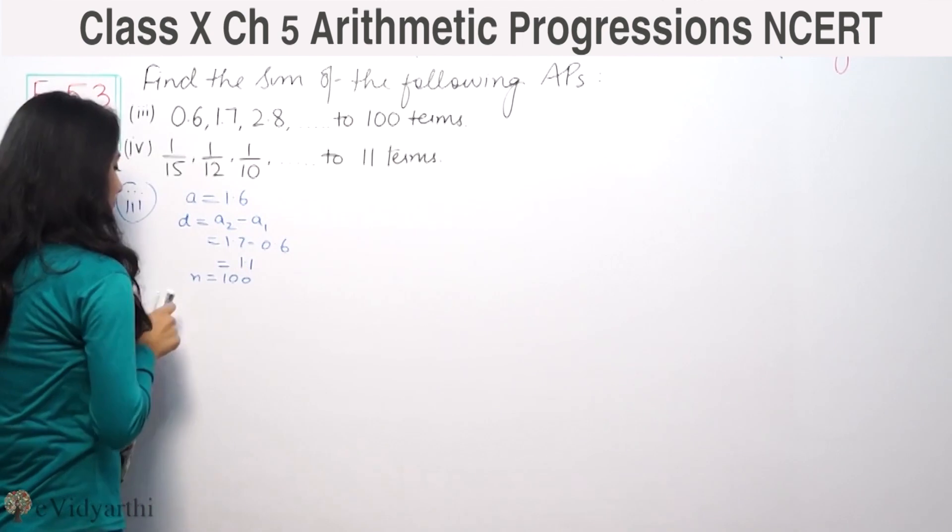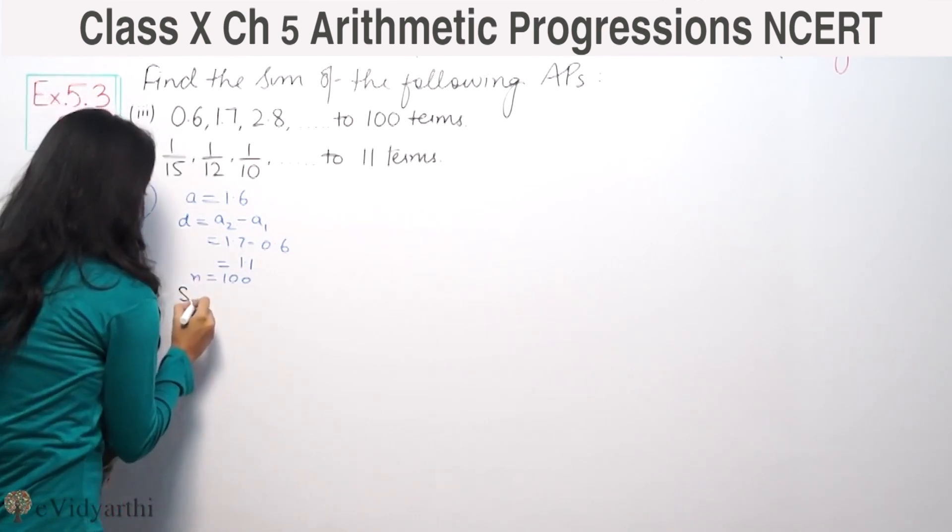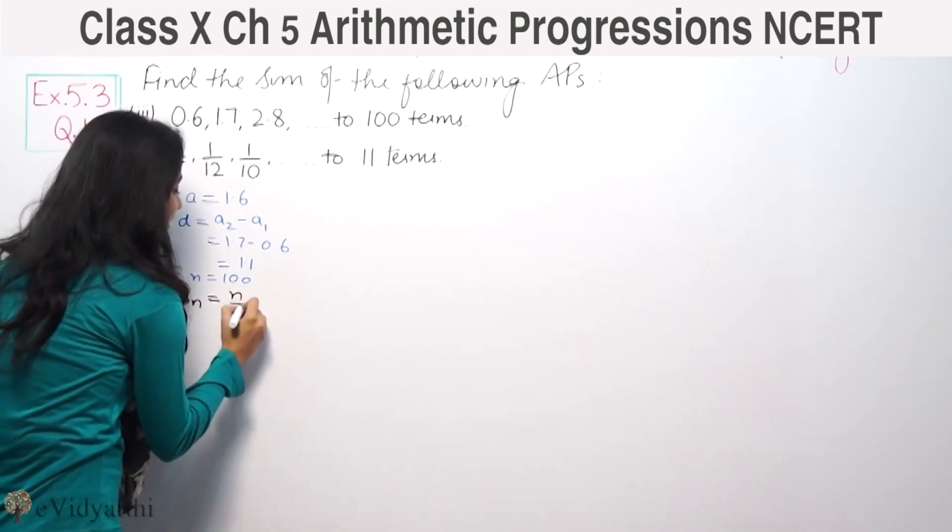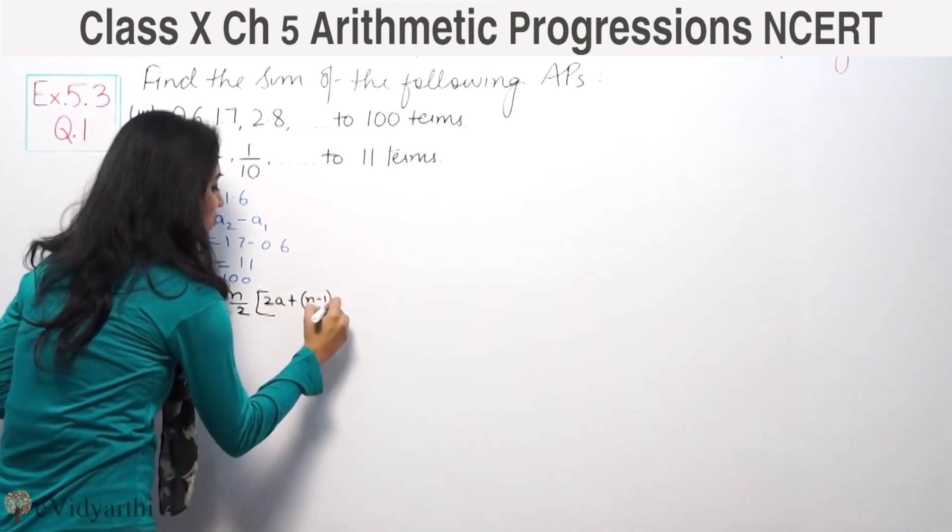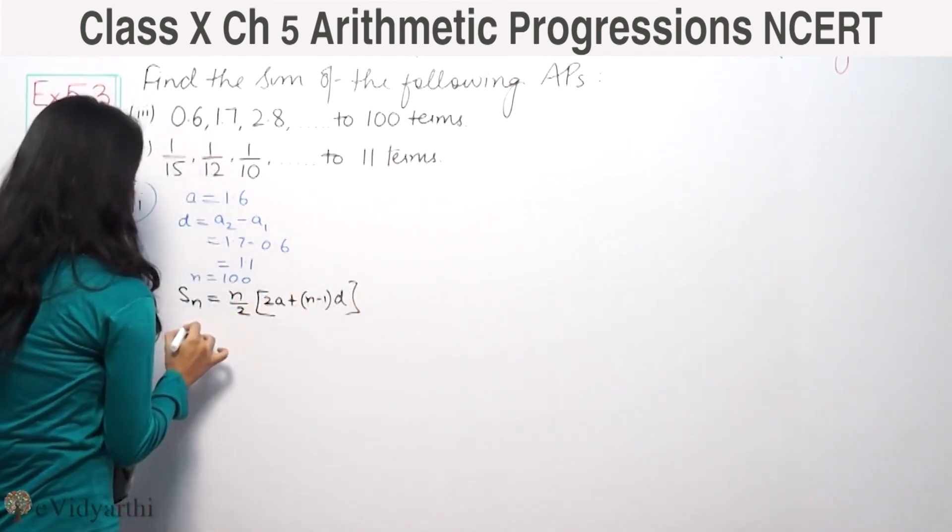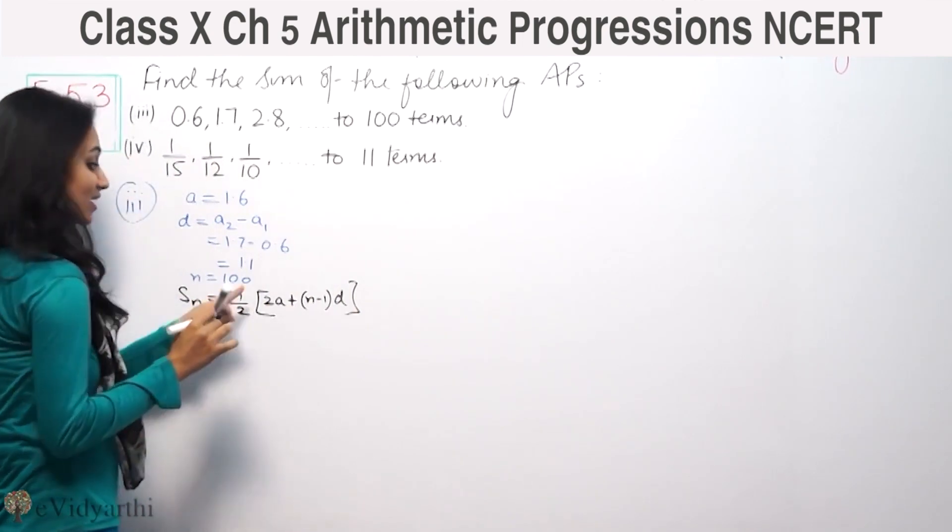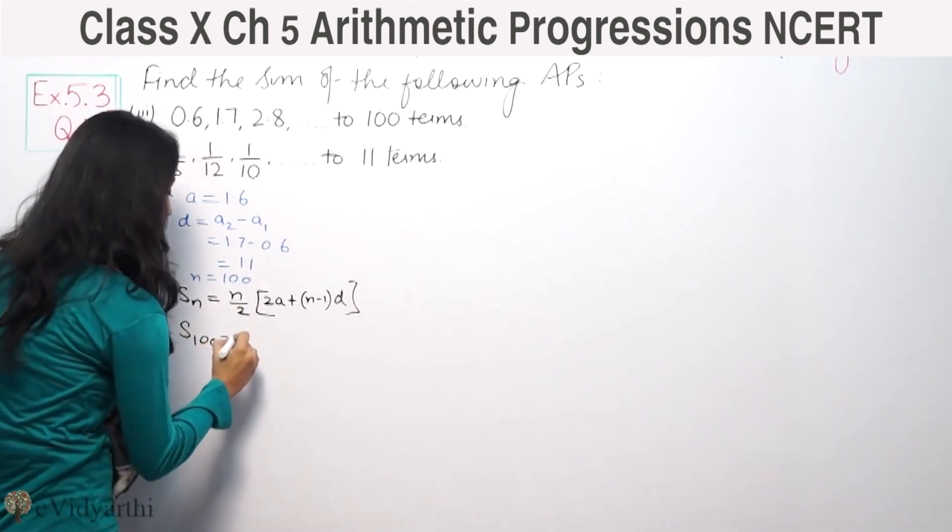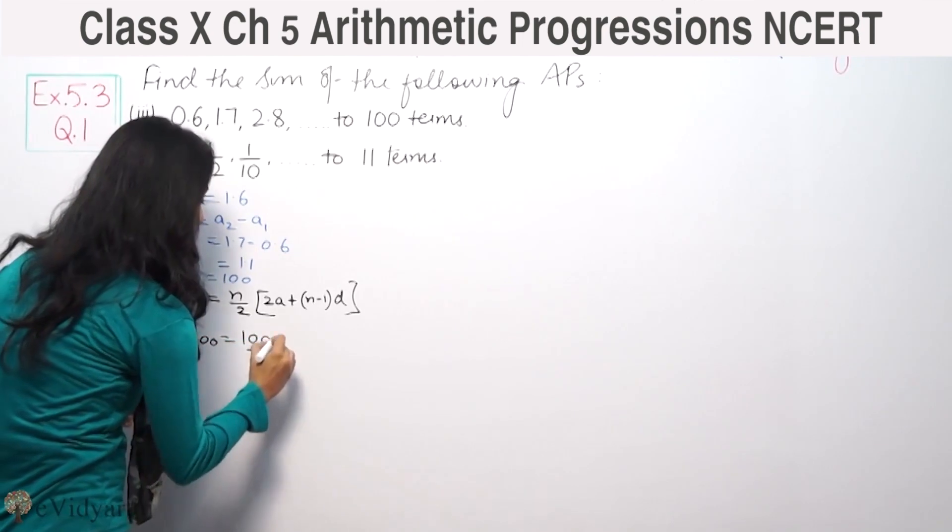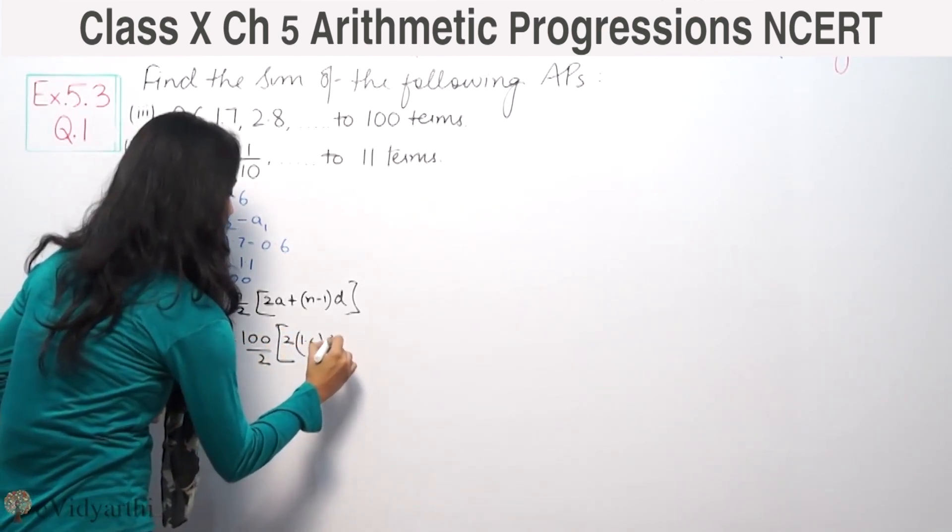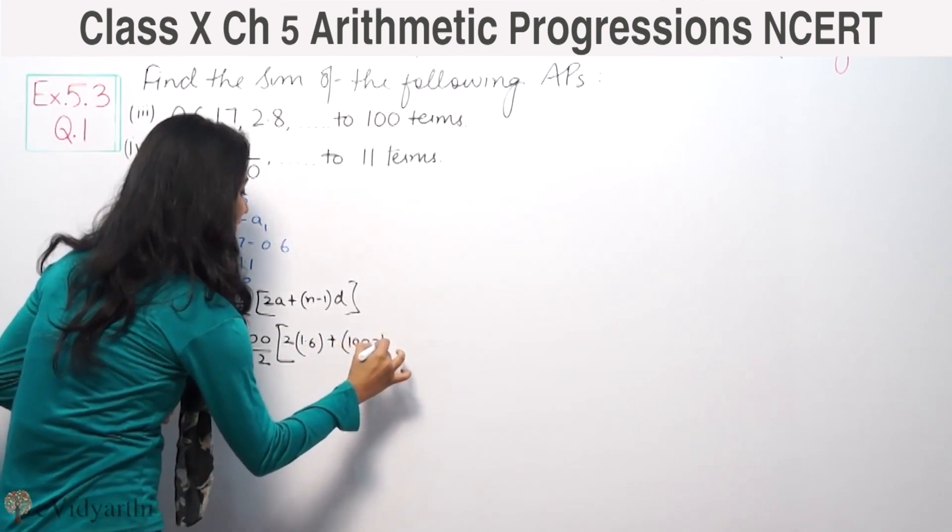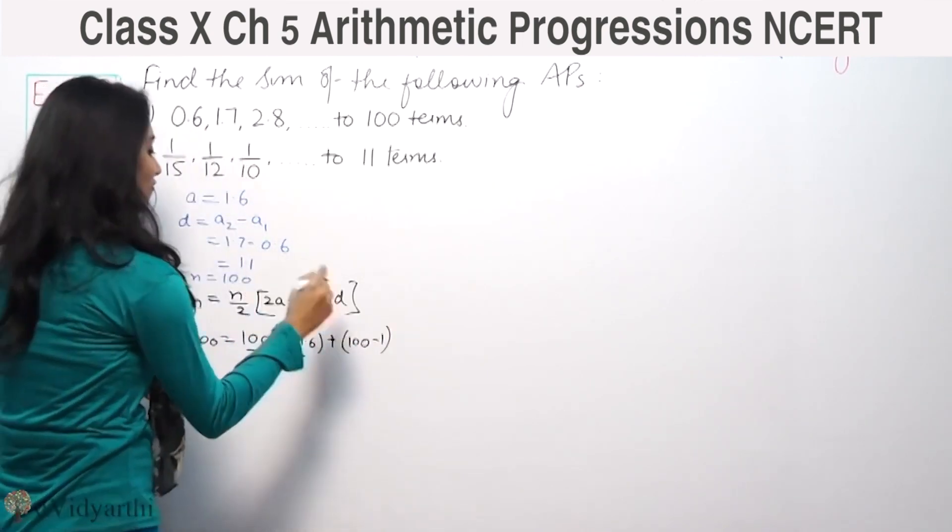Sum formula: Sn is equal to N by 2, bracket, 2A plus N minus 1 D. So S100 is 100 by 2, bracket, 2 times A. A here is 0.6, plus 100 minus 1, D is 1.1.